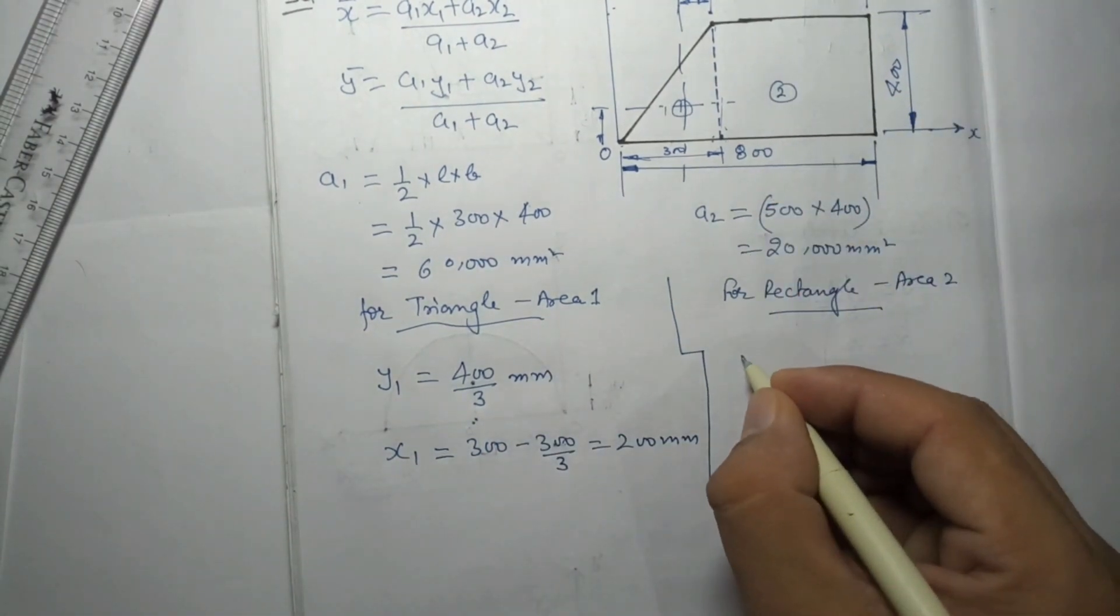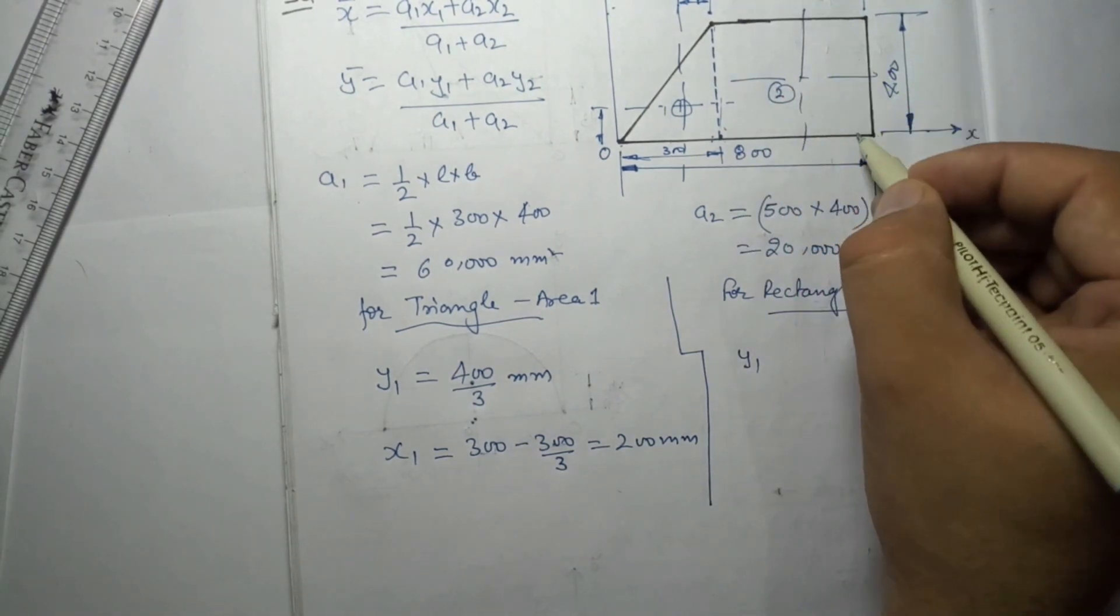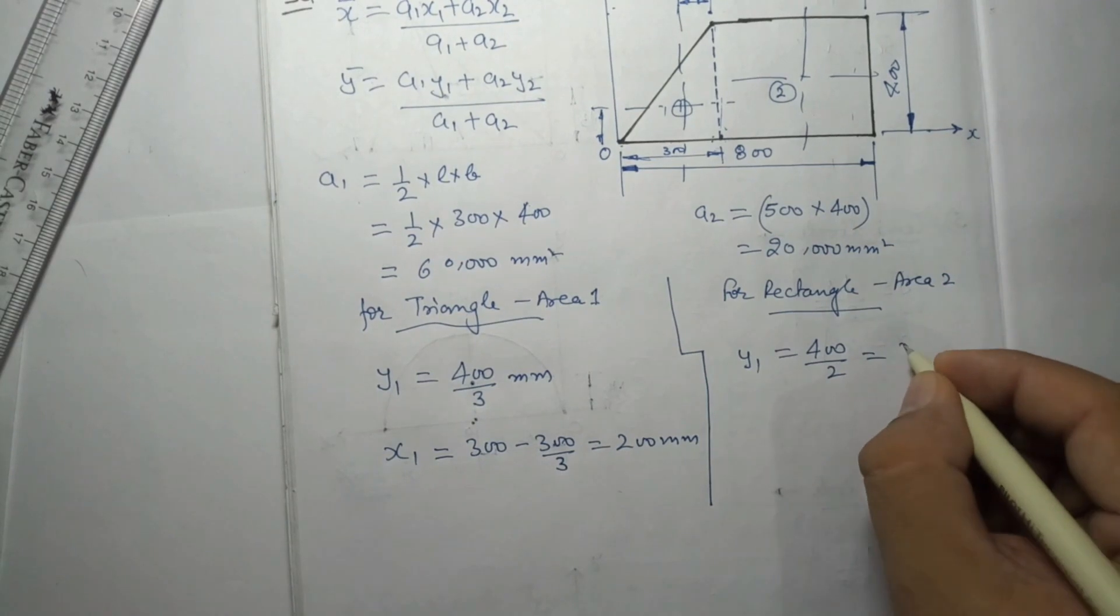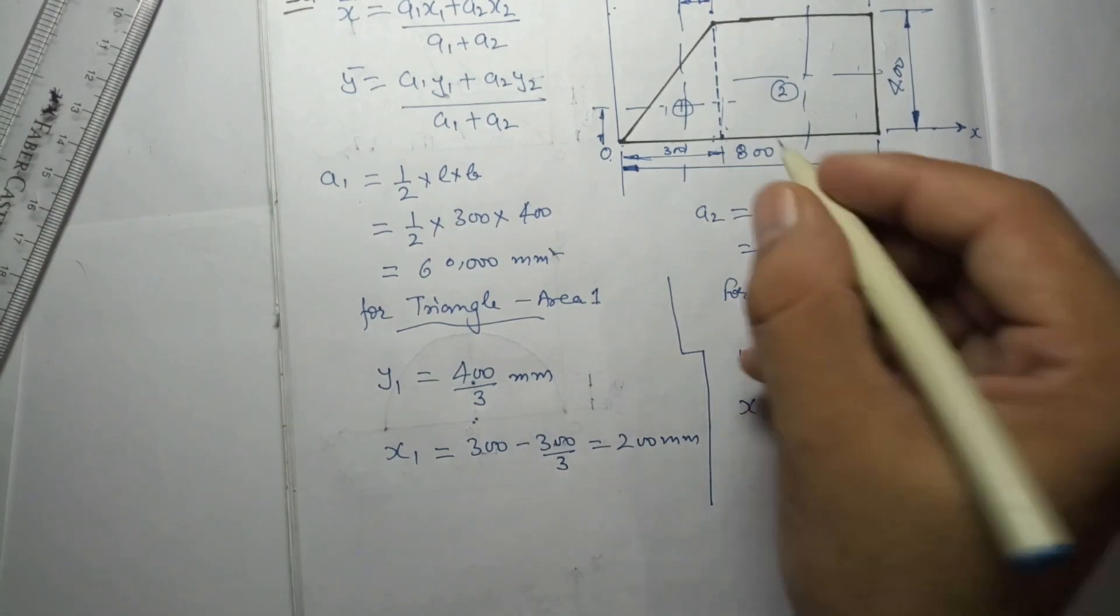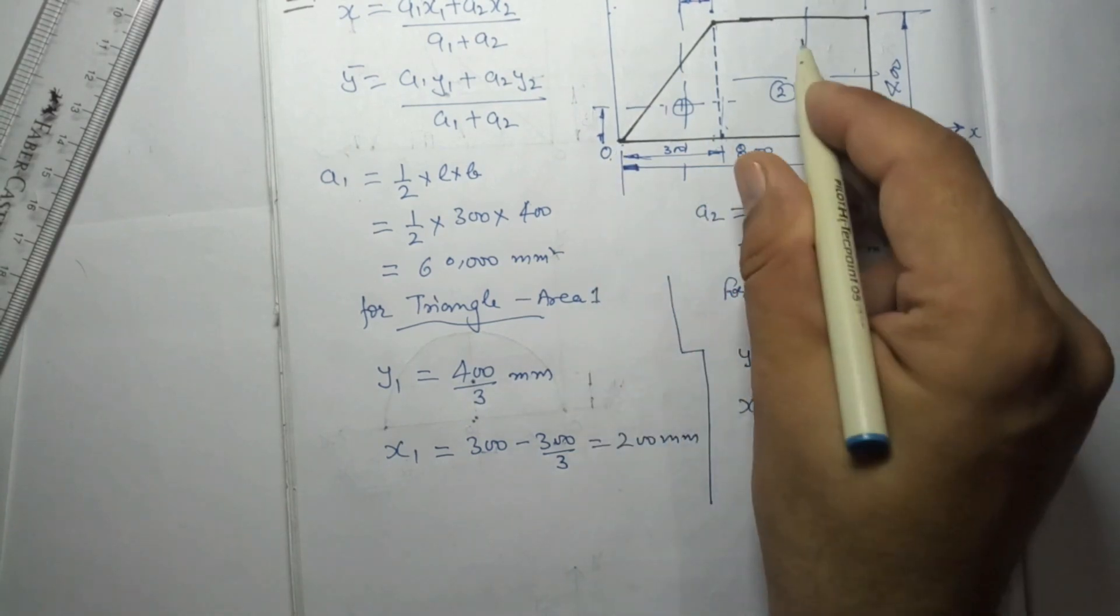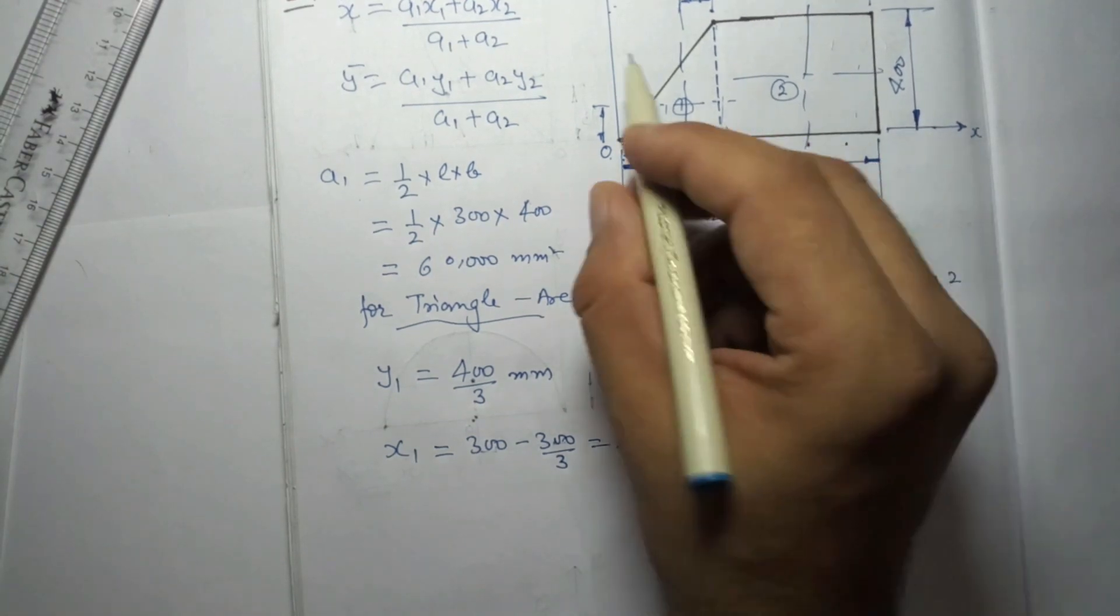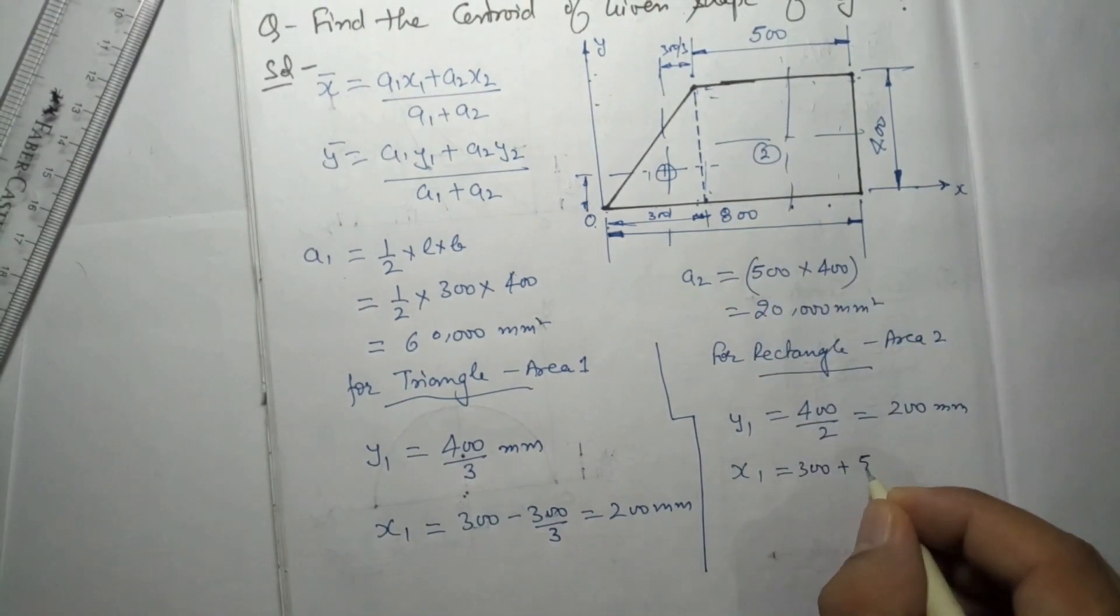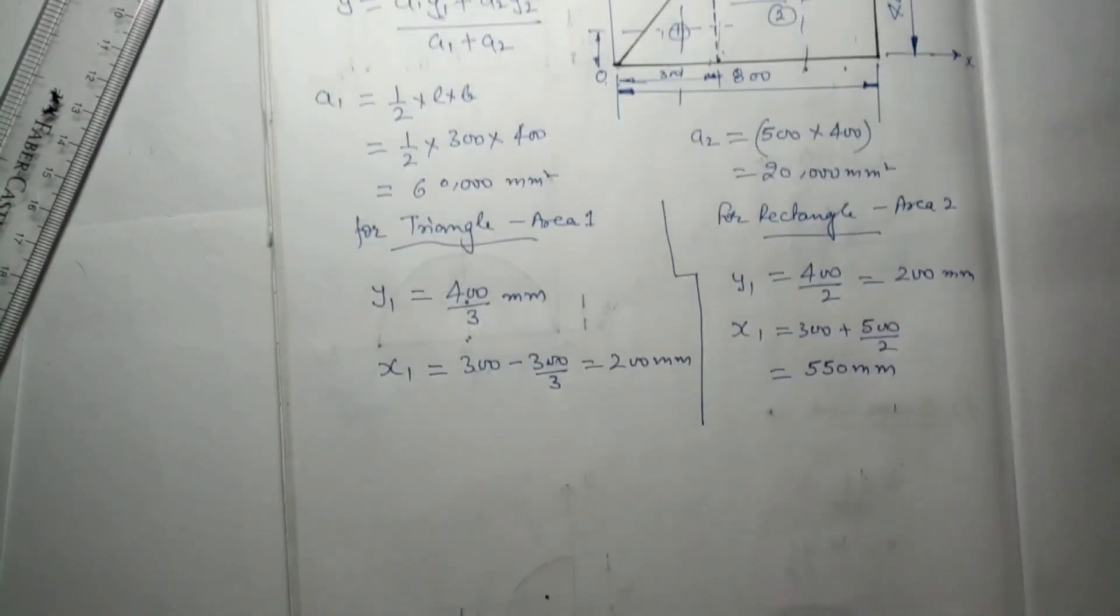Now we will see for area 2. What will be y2? It is a rectangle, so it will be y2 from this x-axis. How much distance? Directly 400/2, that is 200 mm. And what will be x2? Distance in the direction of x from the y-axis. From this point to this axis, what is the distance? It will be 300 plus 500/2, so that is 300 + 250, which equals 550 mm.